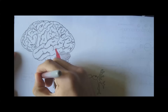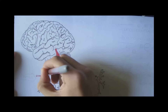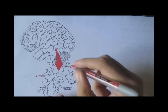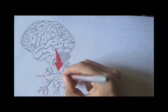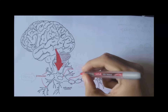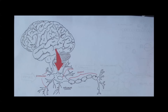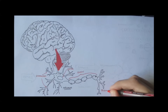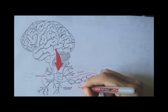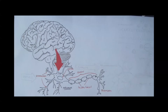Neurons consist of the main structures: the dendrites, soma, the cell body containing the nucleus, the axon, and the terminal. And these things wrapping around the axon are glial cells, or helper cells.